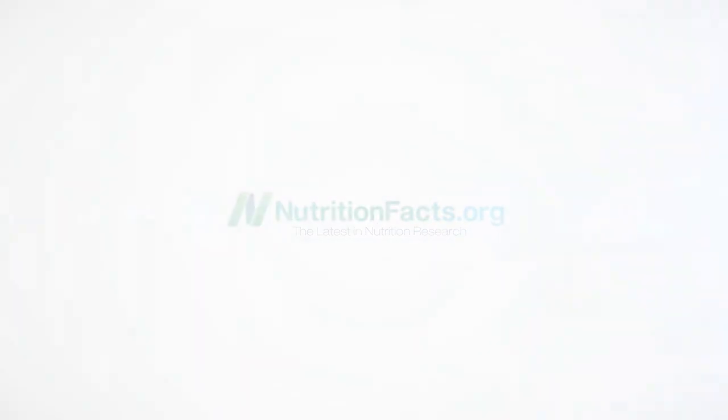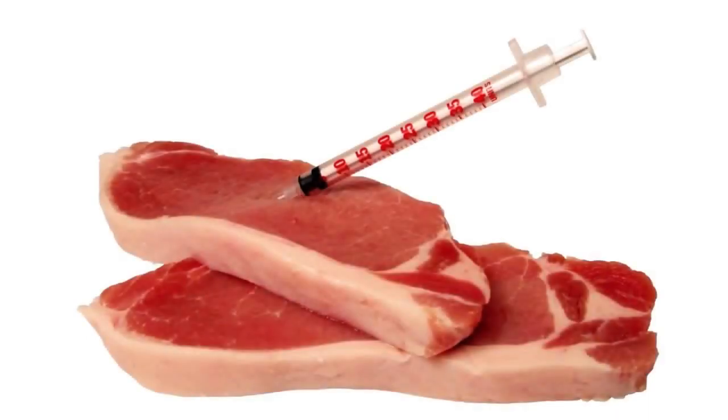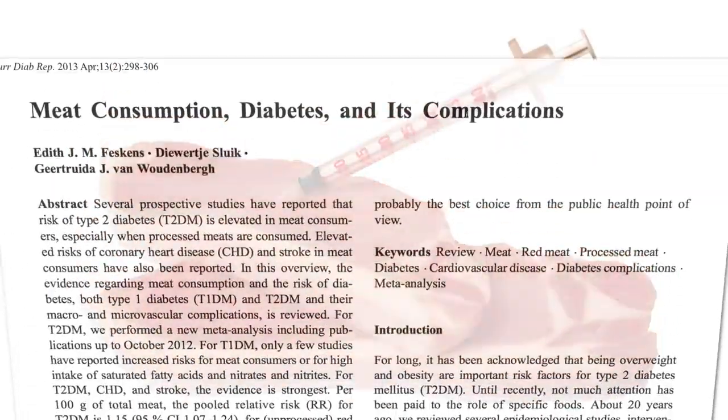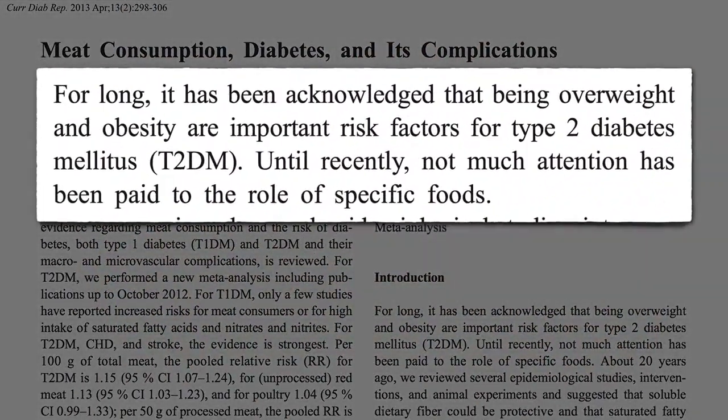What is overweight and obese? We've known that being overweight and obese are important risk factors for type 2 diabetes, but until recently not much attention has been paid to the role of specific foods.